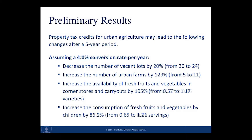This slide shows a slightly more optimistic scenario assuming a 4% conversion rate per year, in which case the model predicts a decrease in the number of vacant lots by about 20%, from 30 to 24, and an increase in the number of urban farms by 120%, from 5 to 11. In this simulation, we expect an increase in the availability of fresh fruits and vegetables in corner stores and carryouts by over 100%, and an increase in consumption of fresh fruits and vegetables by about 86%, which is more than half a serving of fruits and vegetables. There is a fact sheet that has been distributed along with this video clip, which presents a series of assumptions for how we made these decisions and how different components of the model were rationalized.